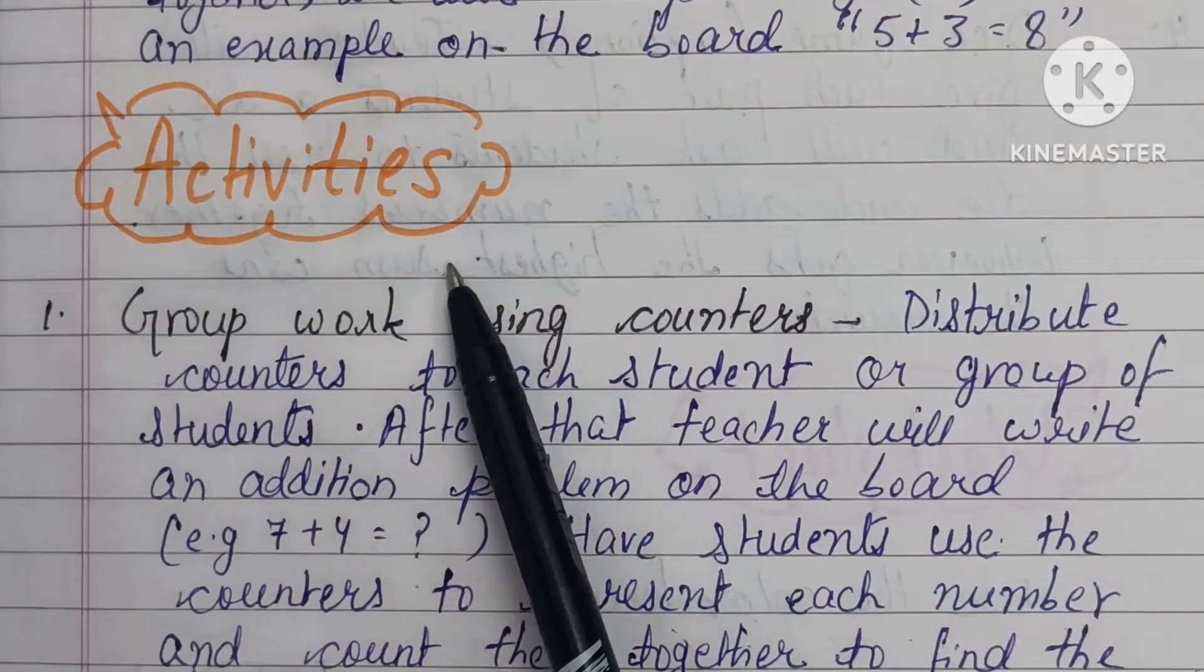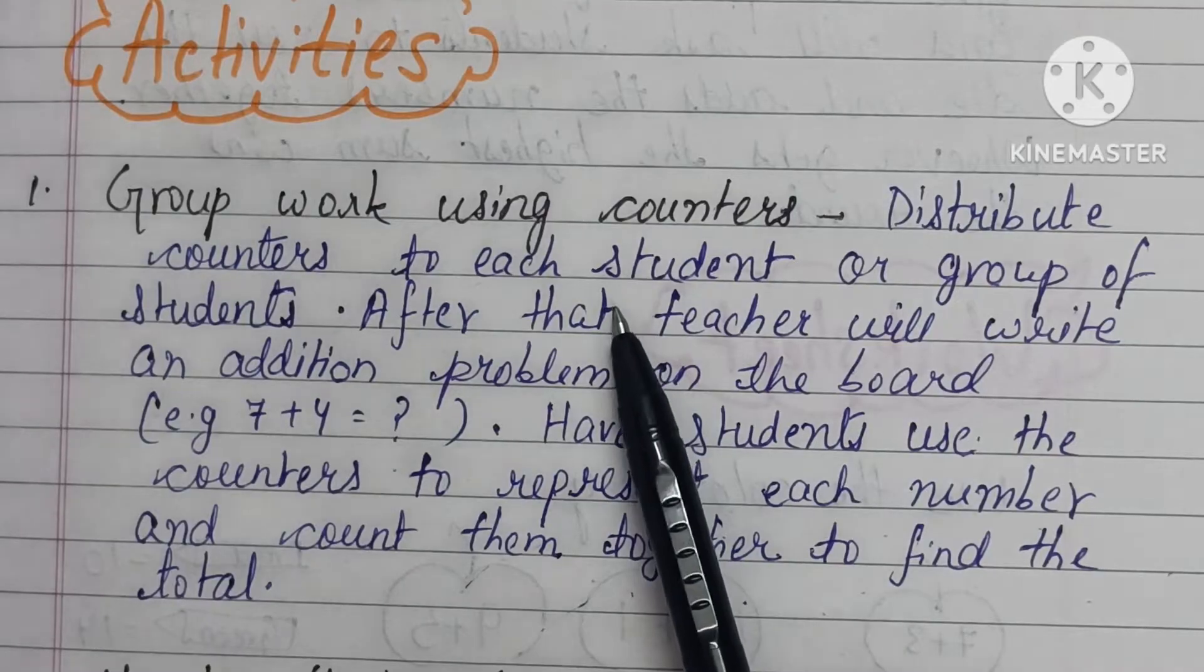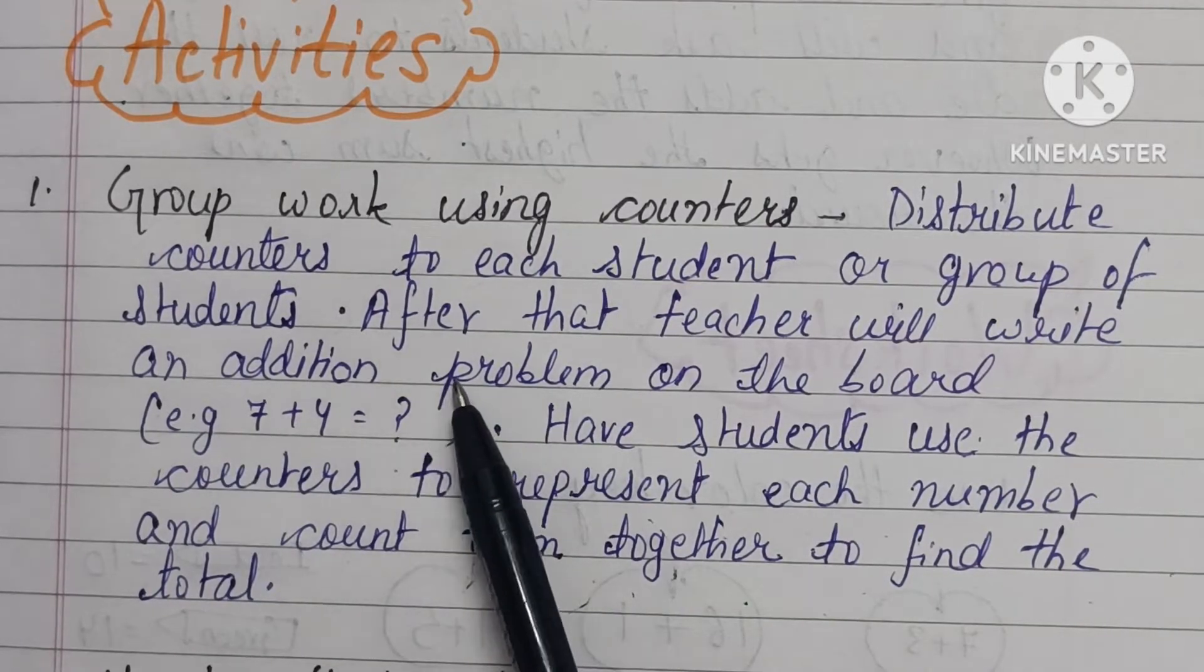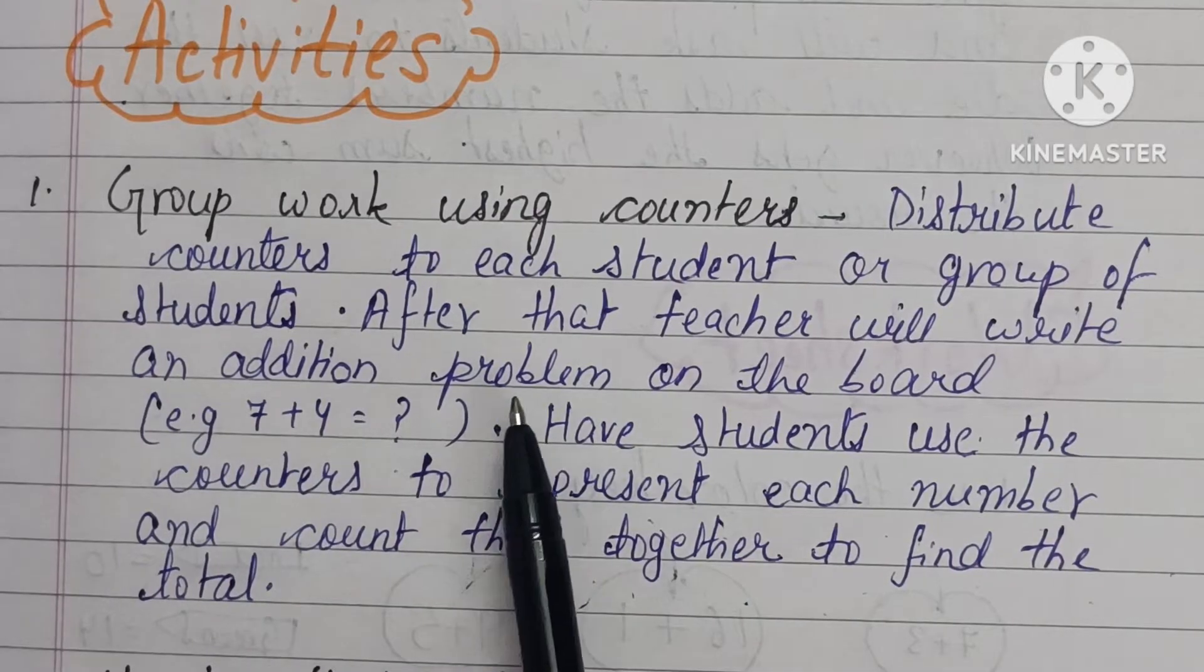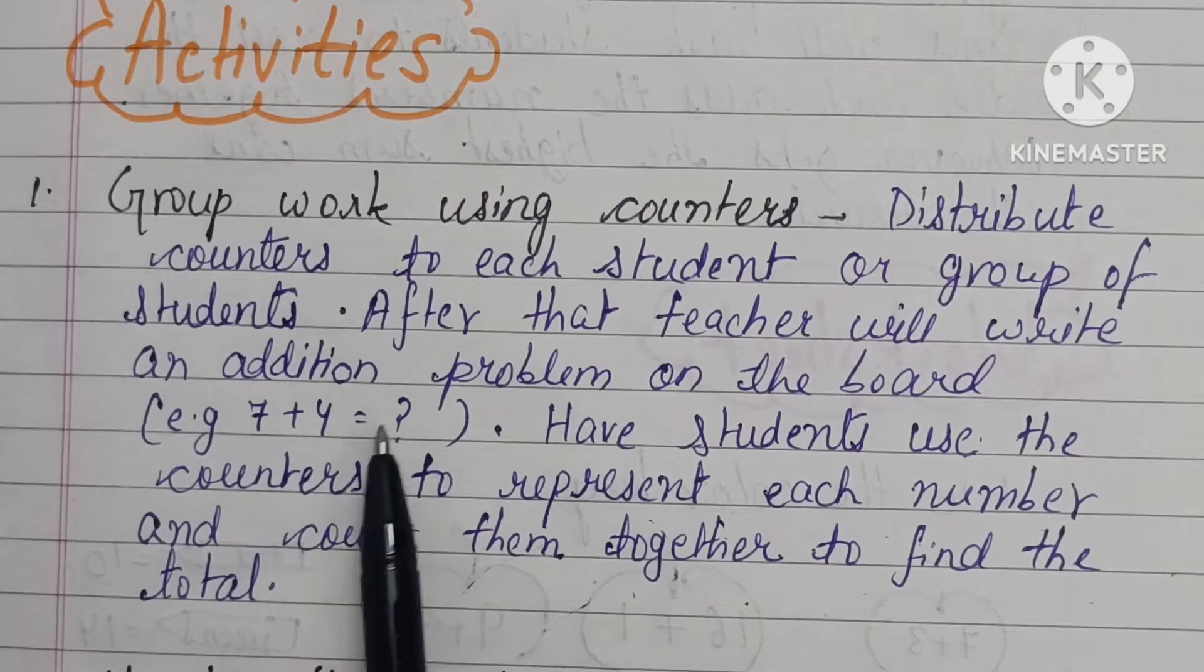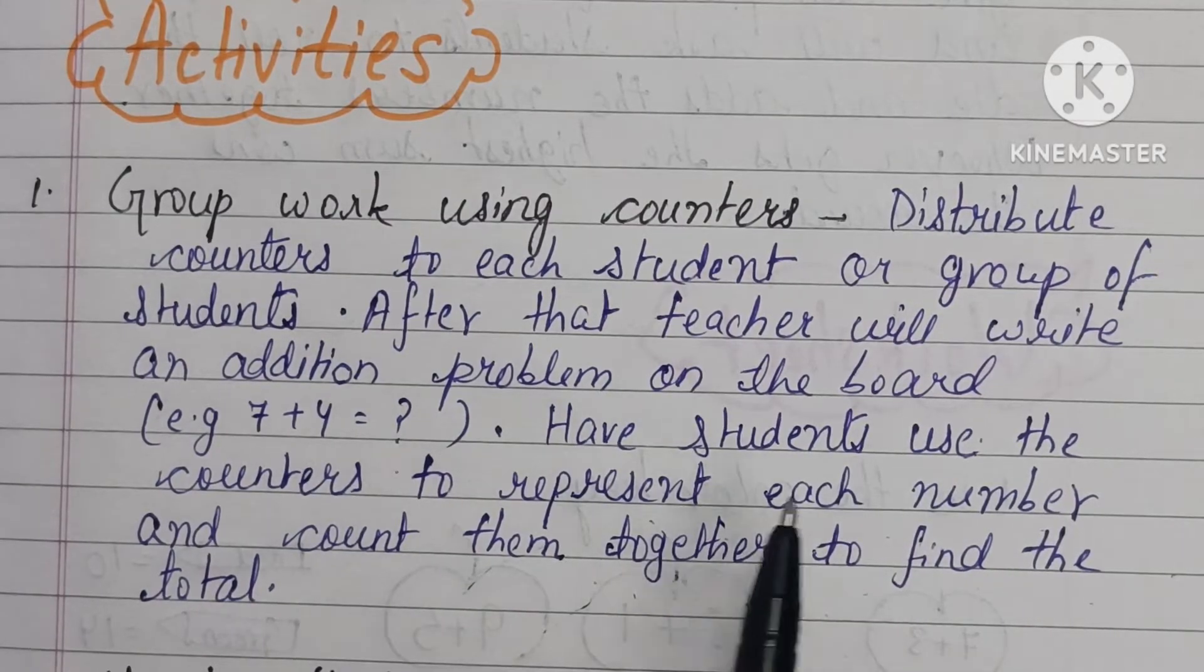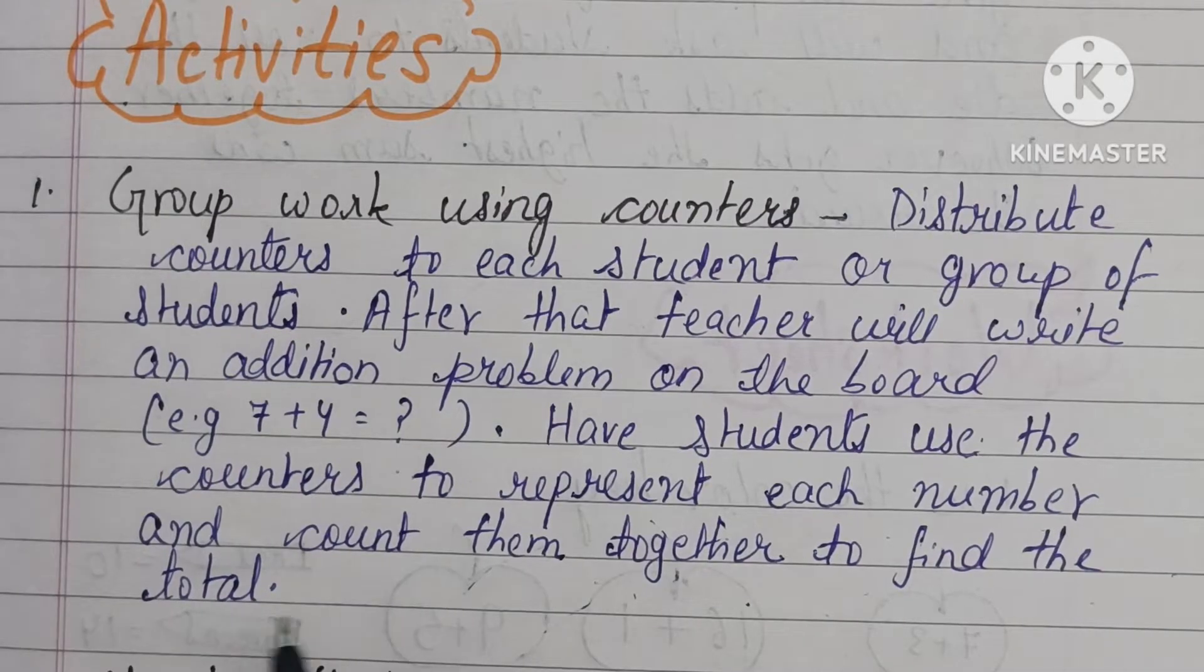Next, activities. First is group work using counters. Distribute counters like buttons, blocks or any other objects to each student or a group of students. Then write on the board any easy addition problem like seven plus four equals question mark. Have students use the counters to represent each number and count them together to find the total.